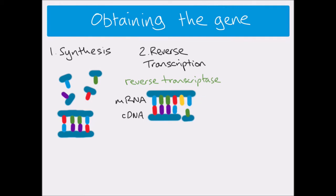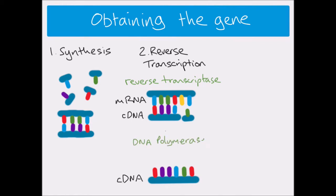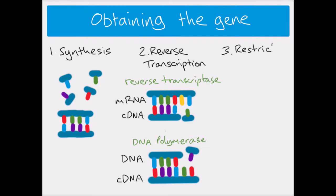At this point you have a single strand of DNA, but we need a double strand. So you use the complementary DNA strand as a template, then use the enzyme DNA polymerase plus free nucleotides to build a second strand of DNA, giving us double-stranded DNA for the gene of interest.